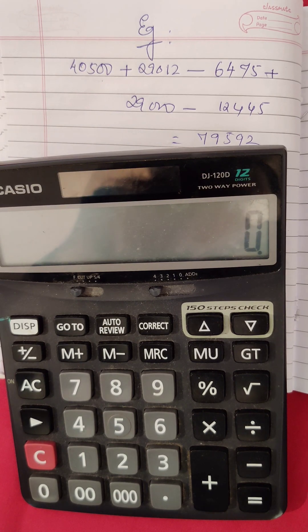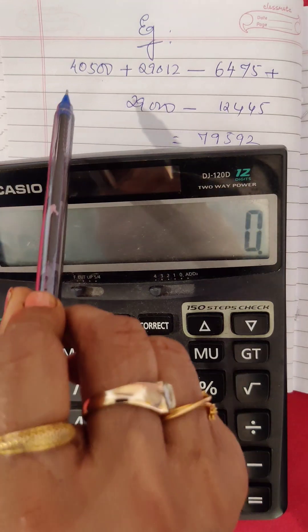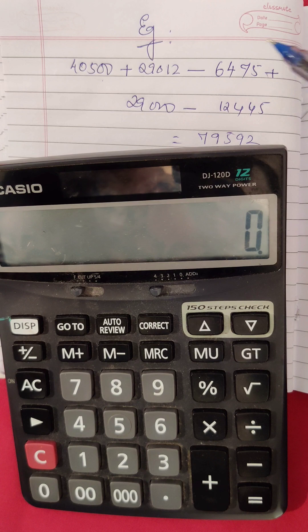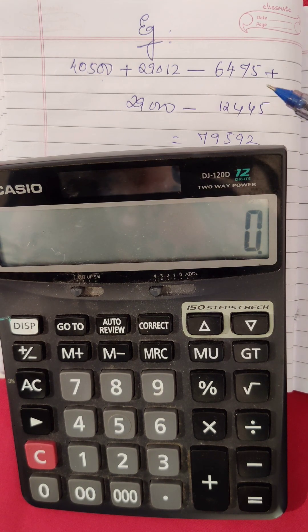Let's see how to do it with an example. Now I've written down some numbers here: 40,500 plus 29,012 minus 6,475 plus 29,000 minus 12,445.